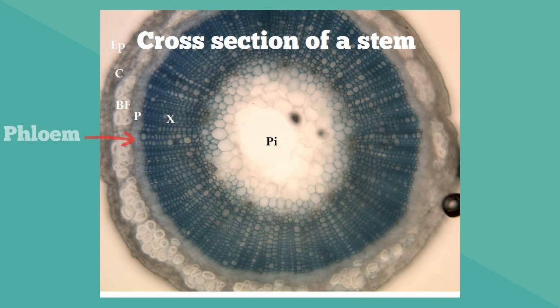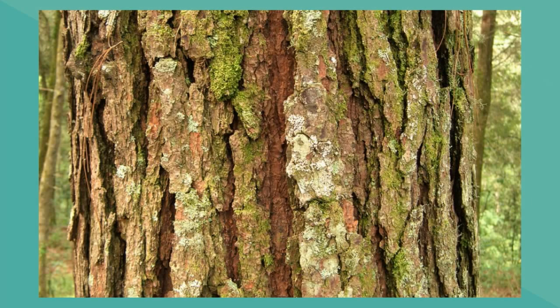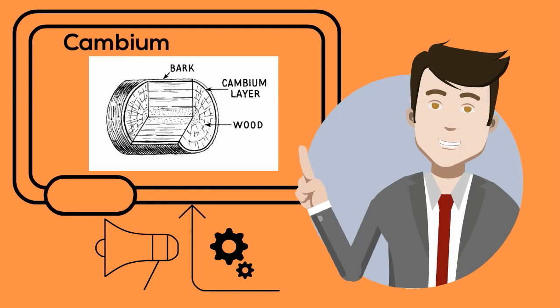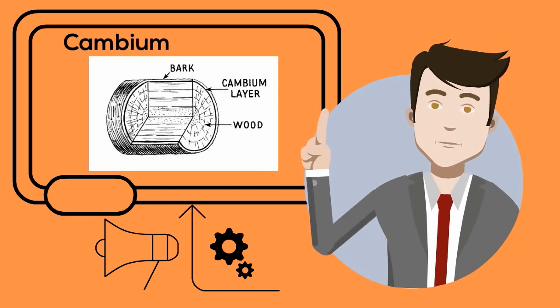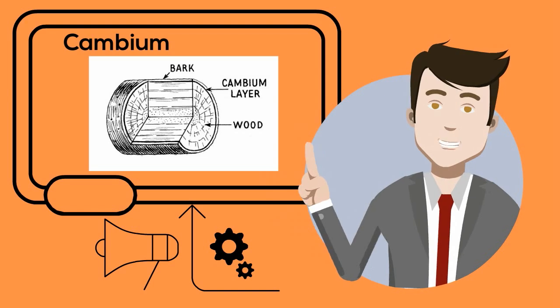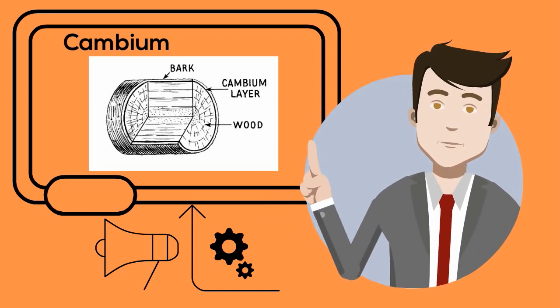Stems consist of phloem and xylem. Phloem move materials from the leaves and other parts of the plant. However, in woody stems you have an outer layer called bark. Just inside the phloem is a layer of cells called the cambium. The cambium divides to produce new phloem and xylem.